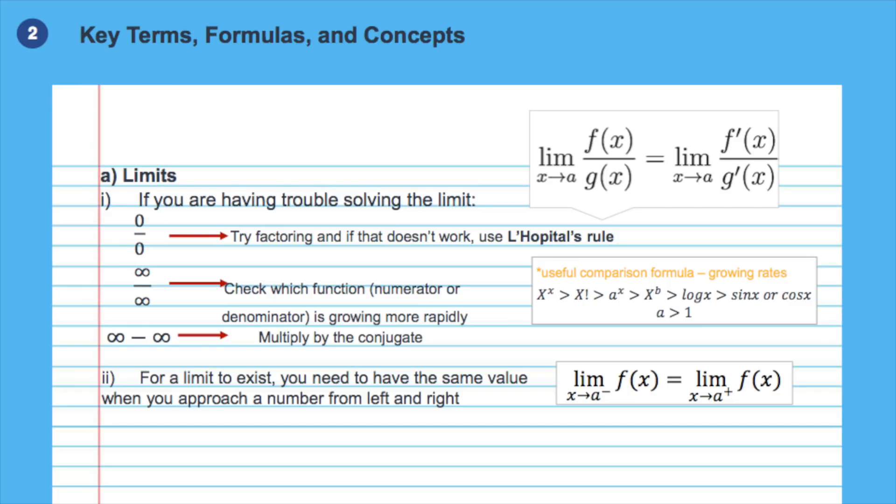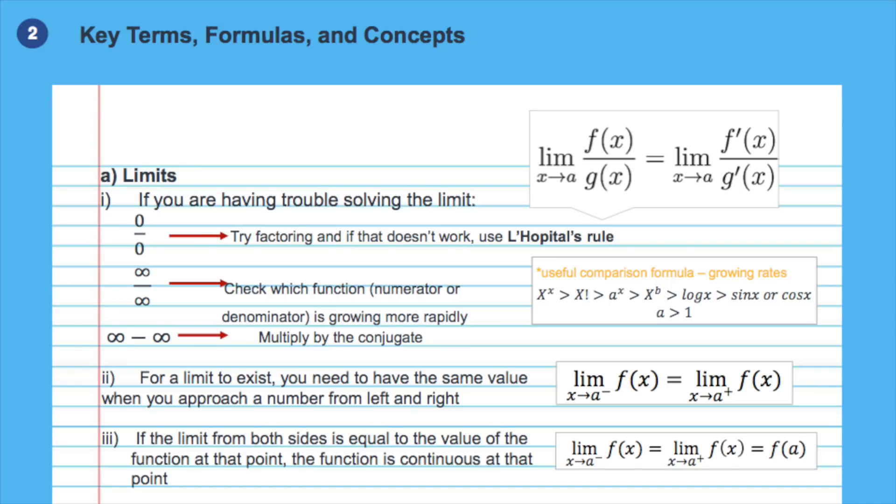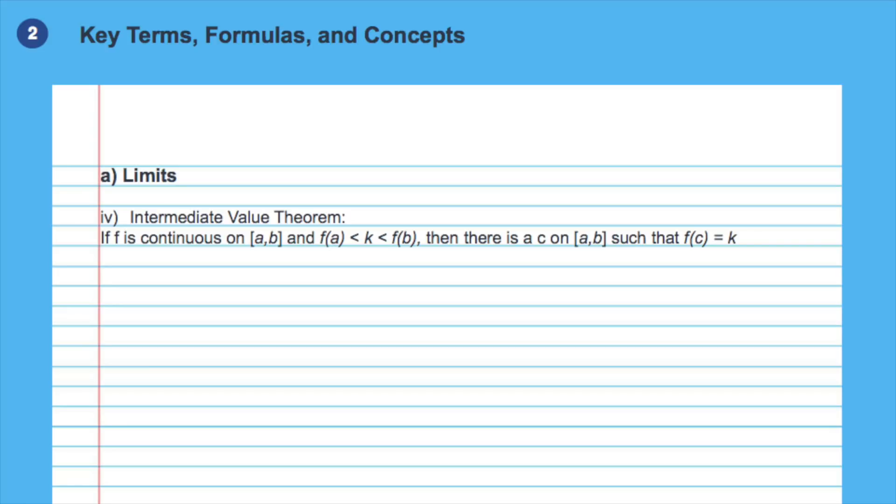For a limit to exist at a specific point A, the limit approaching A from the left side and the right side should be equal. And for a function to be continuous at a specific point A, f of A should also be equal to the limit from left and right. According to the intermediate value theorem, if f is continuous in a closed interval from A to B and if k is in between f of A and f of B, then there is a C in that interval such that f of C gives us k. This theorem is useful when estimating limit values in a given interval.